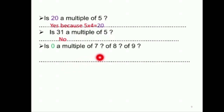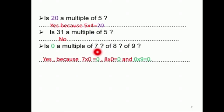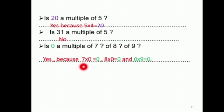Is zero a multiple of seven? أحنا بنعرف أنه zero هو multiple of any number، لأنه كل النمبرز بنقدر نحصل على seven times zero بيعطينا zero. يعني الملتبل هو بيكون جواب الضرب، فزيرو هو موجود بالـ table لكل الأعداد، كل النمبرز. يعني zero هو multiple لكل النمبرز.